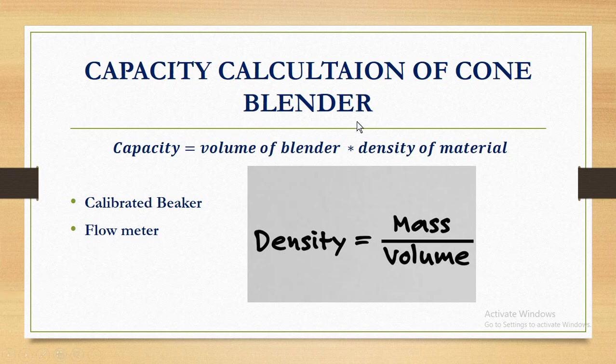This is the basic reason why we use the term in liters. This is the density formula: density equals mass divided by volume. When we use the blender, we use the identification plate provided by the manufacturer. If you don't know the volume, there are two or three easy ways to find it.